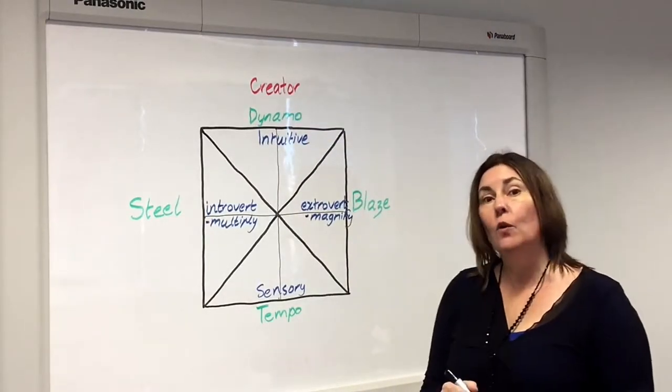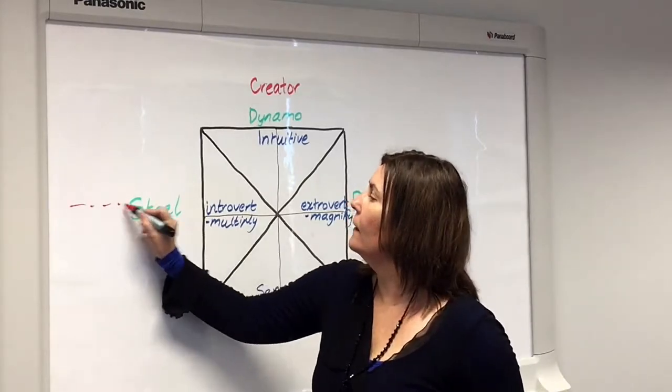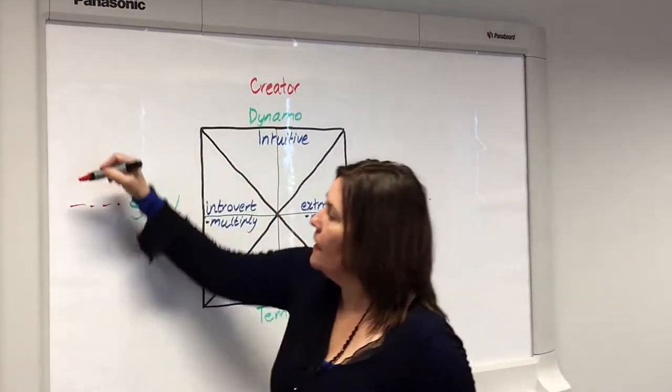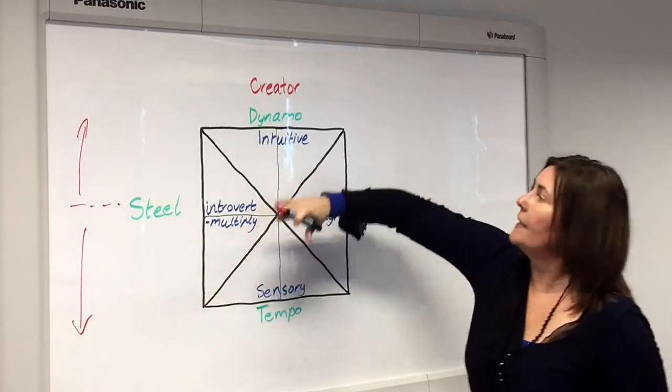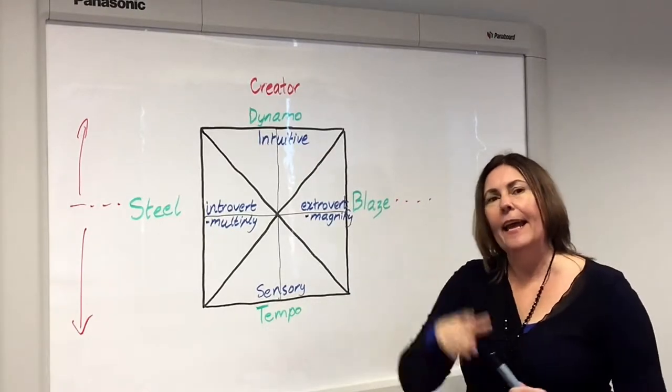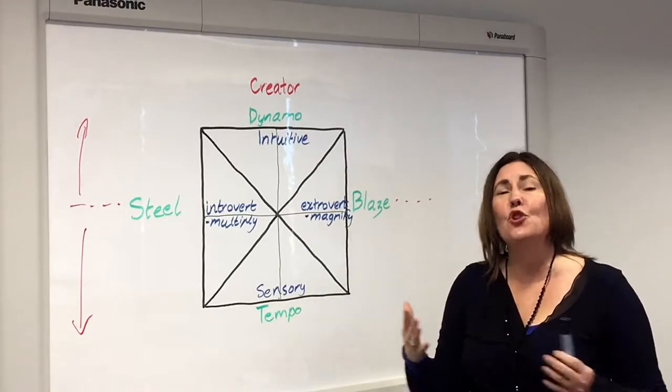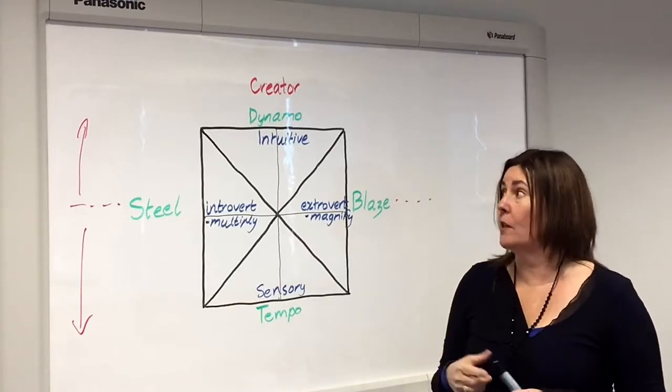So let's have a look at also the way that they think. So I'll just draw this out here. So you've got your thinking going up that way and down that way. You can see that creators here are your intuitive thinkers. Their heads in the clouds, they're coming up with new ideas left right and centre and ideas just come to them.